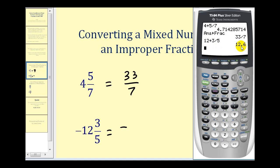The calculator automatically gives the decimal value. And then to convert this to an improper fraction we just press math, enter, enter. And so it's equal to negative sixty-three-fifths.